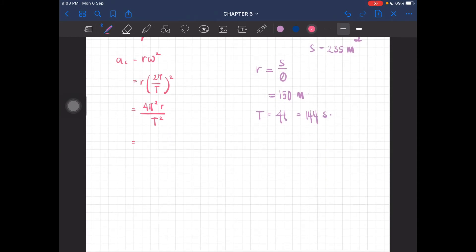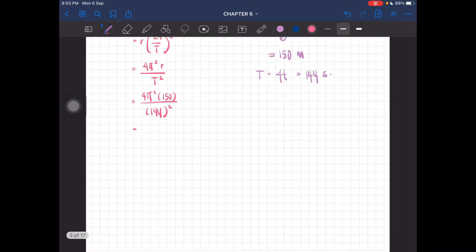Just substitute all the values. You should get the centripetal acceleration to be equal to 0.286 meters per second squared. The direction is towards the center of the circular path.